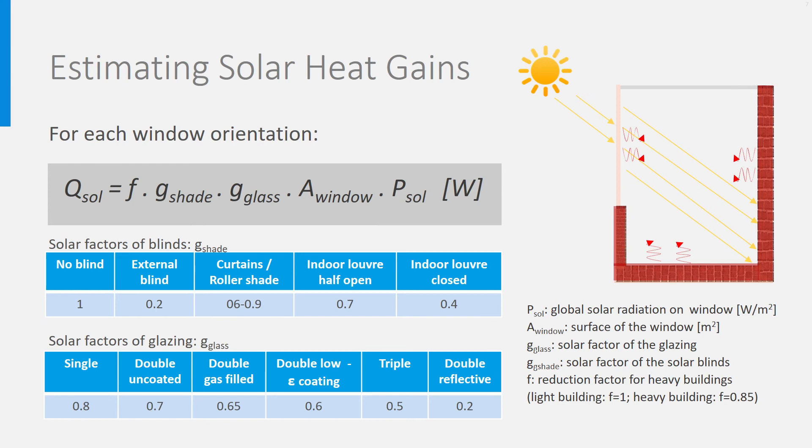Be aware that p sol will be different for each orientation. In the northern hemisphere, for a window oriented to the north, p sol will be much lower than for a window oriented south. In the southern hemisphere, this will be the opposite.